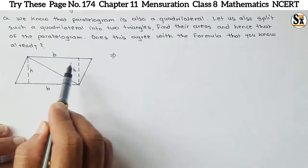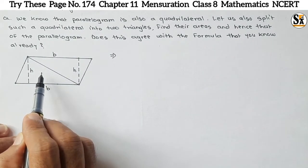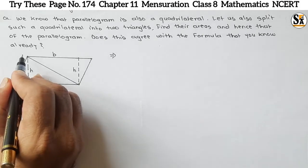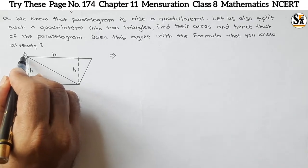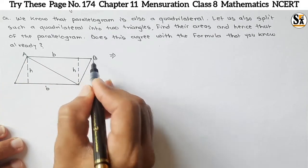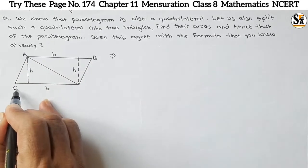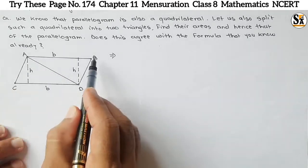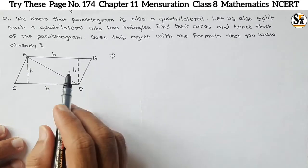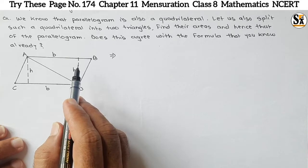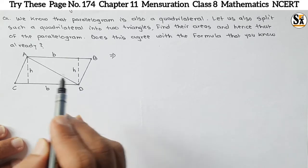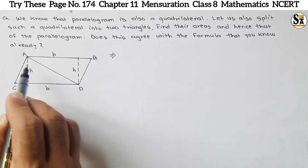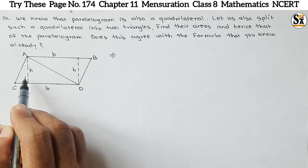Now the parallelogram is split into two triangles. Let's name the vertices as A, B, C, and D. So this is quadrilateral ABDC — it is a quadrilateral and also a parallelogram. What is asked is that it is cut into two triangles.